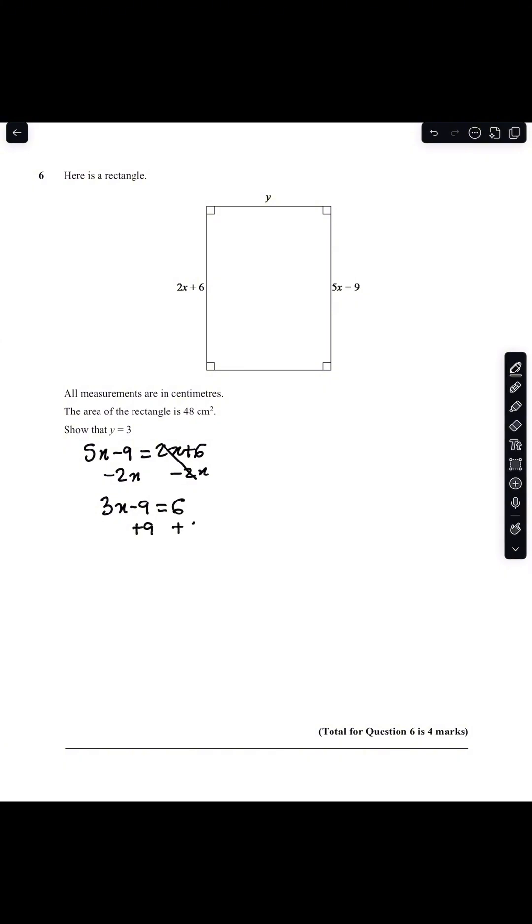I can add 9 to both sides, so 3x equals 15, and so x equals 15 divided by 3 which is 5.